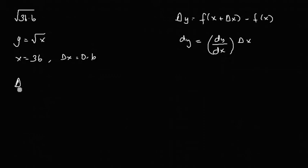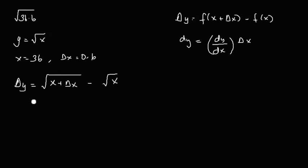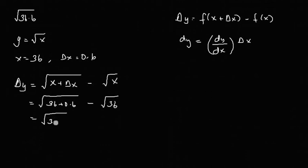By definition, Δy equals f of x plus Δx minus f of x, which is root of x plus Δx minus root x. Substituting, that is root of 36 plus 0.6 minus root 36, which equals root 36.6 minus 6. This is our first equation.